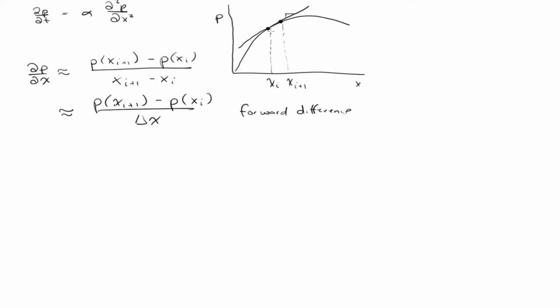It's called forward difference because we're sitting at x_i and we looked forward to x_{i+1} to evaluate the function at that point to compute the derivative. We also could have looked backwards to point x_{i-1} — that would be a backwards difference approximation. And then there's also one that's called central difference.